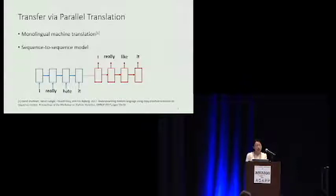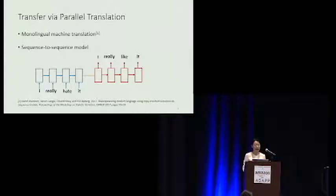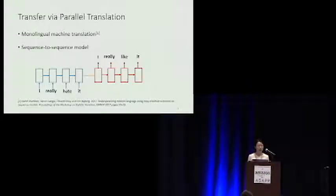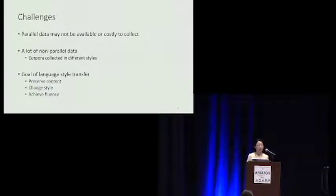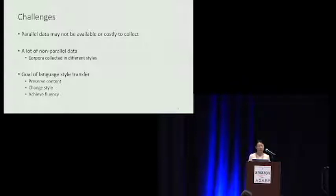There has been research on the style transfer task. Early works assume that we have access to parallel data, so the problem of style transfer can be cast as a monolingual machine translation problem. You can simply use a sequence-to-sequence model to learn the transfer from a source sentence to a target sentence. However, it is often the case that we do not have parallel data, or the parallel data is very expensive to collect.